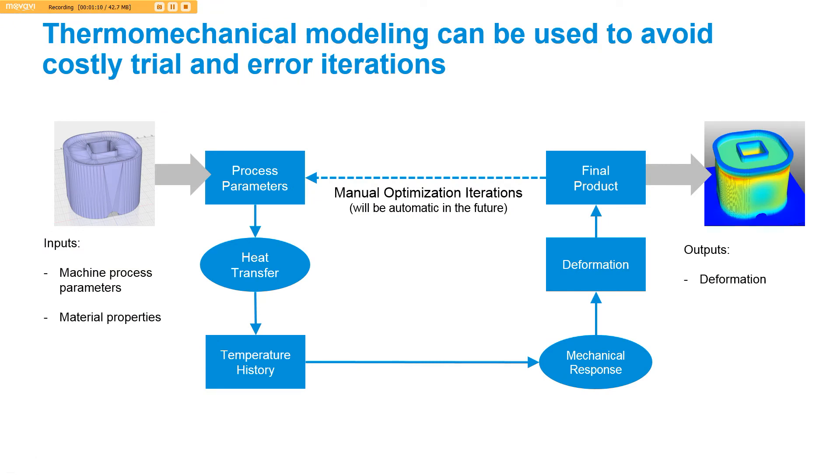Because these trial and error iterations that it takes to get a successful build are very costly, it would be more cost-effective to run a thermomechanical simulation before actually going to the machine. If you know your machine process parameters and material properties, you can input those into a heat transfer analysis to calculate the temperature of the part during the entire build process. You can then take those temperature predictions and feed them into a mechanical response calculation and calculate the deformation and stress. Then you can look at that final product and say, is that something I really want to build, or does it need more design iterations before taking that to the machine?